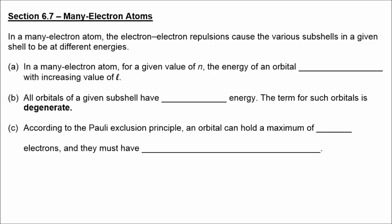Now on to Section 6.7, many-electron atoms. In a many-electron atom, electron-electron repulsions cause the various subshells in a given shell to have different energies. For a given value of n, the energy of an orbital increases with increasing l — so p has higher energy than s, and d has higher energy than p within a given shell. All orbitals of a given subshell have the same energy — they are called degenerate. According to the Pauli exclusion principle, an orbital can hold a maximum of 2 electrons, and they must have opposite spins.